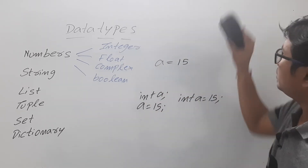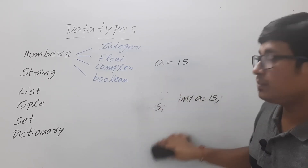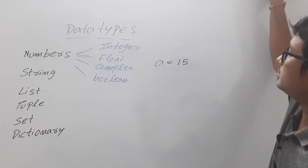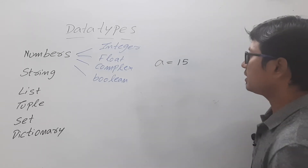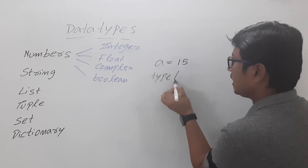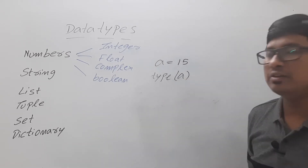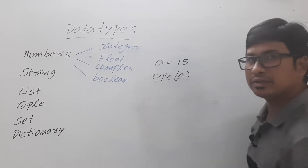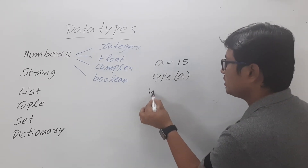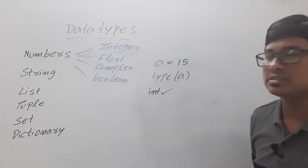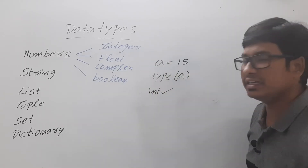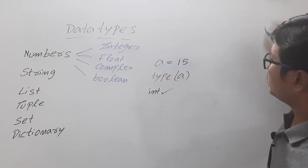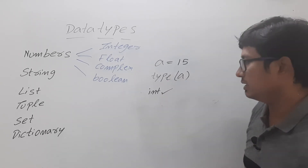If I want to find what data type a variable is — whether it is an integer, float, complex, or boolean — I can use the type() function and write type(a). If you execute that statement it will print 'int', meaning the data type of variable a is an integer.